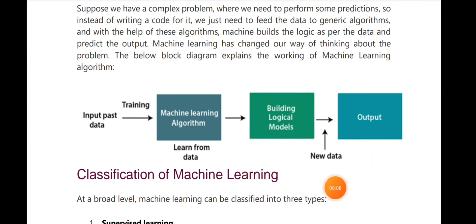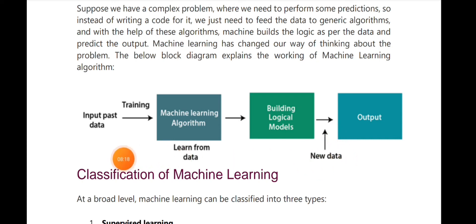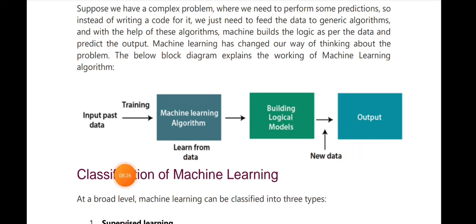Then we provide new data — not the past data, but new user data — and the machine uses the mathematical model to make decisions. The machine shows very good improvement as it receives more data.